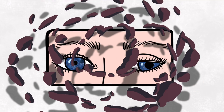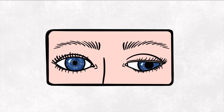Here we can see typical symptoms that we would expect in a complete third nerve palsy, all caused by lack of supply of the oculomotor nerve. The trick is to remember that the other nerves innervating the motor and sympathetic functions in this area are now working unopposed, so all the effects we are going to see are actually from them.